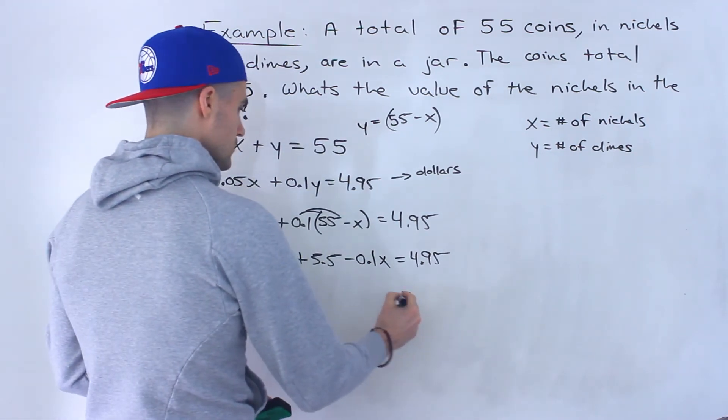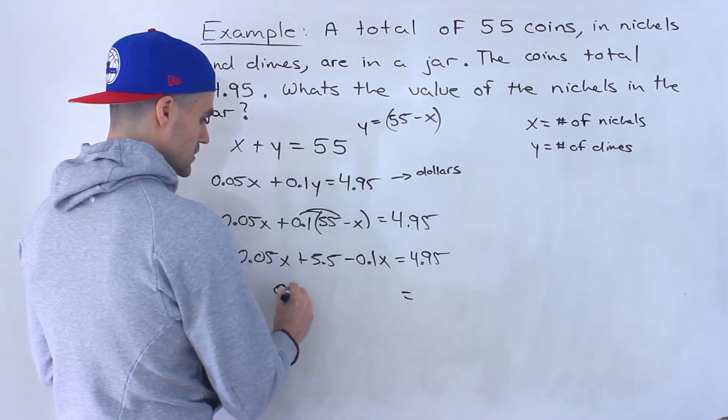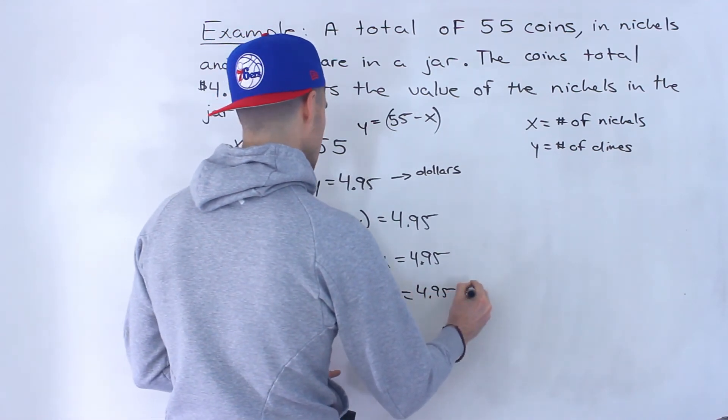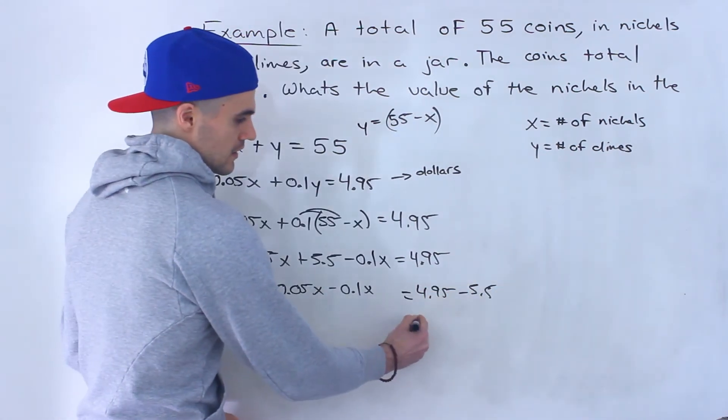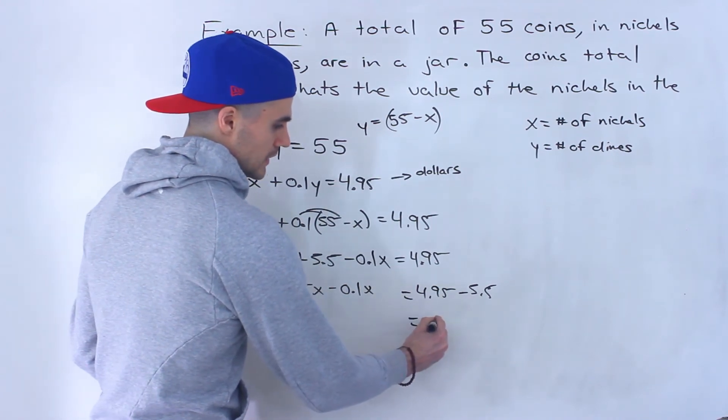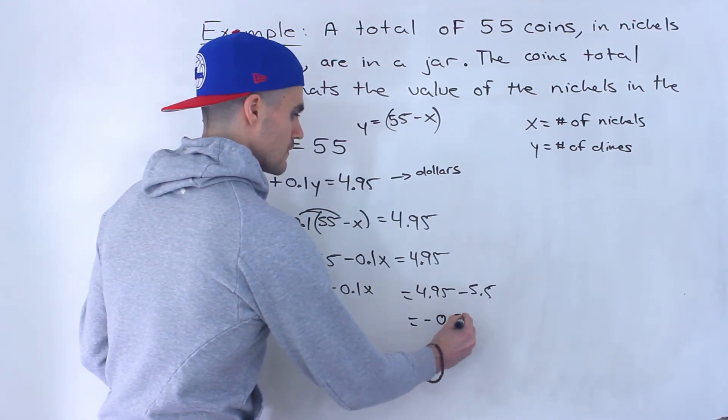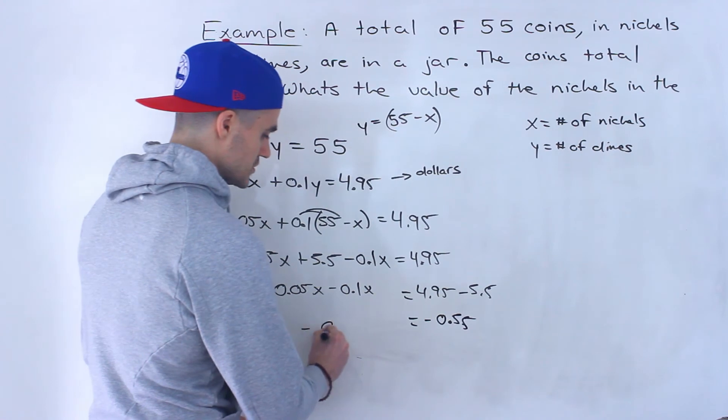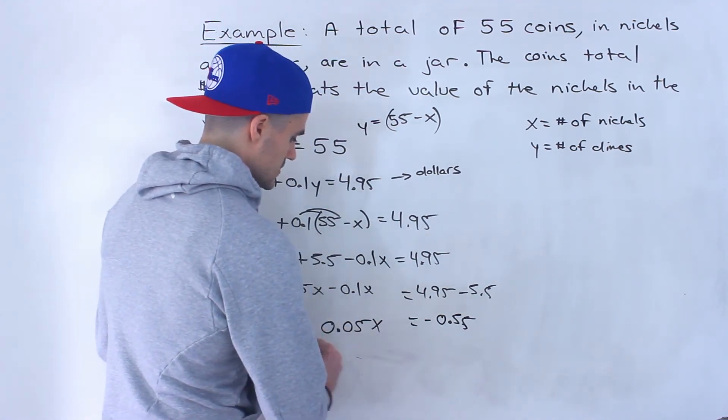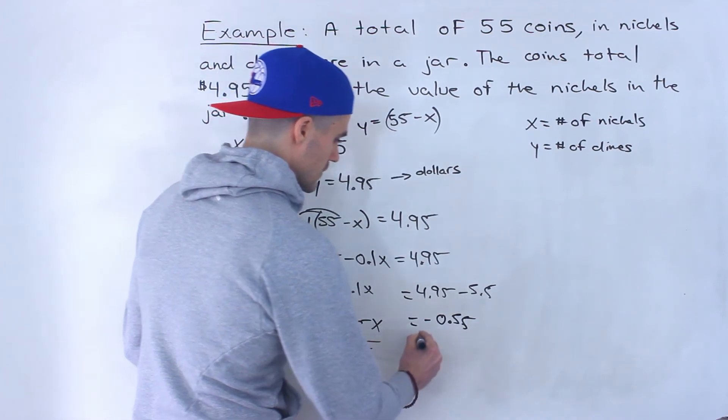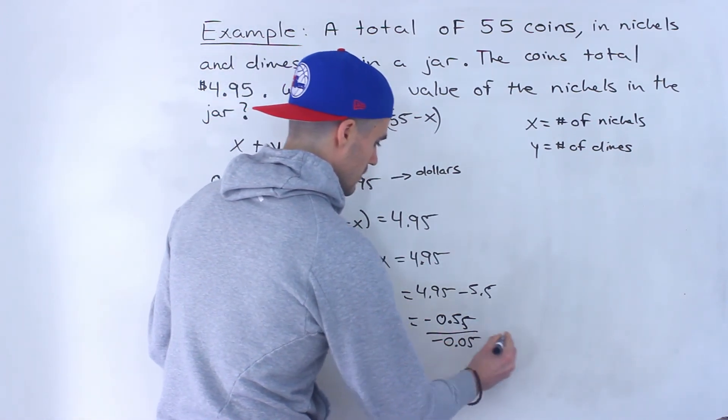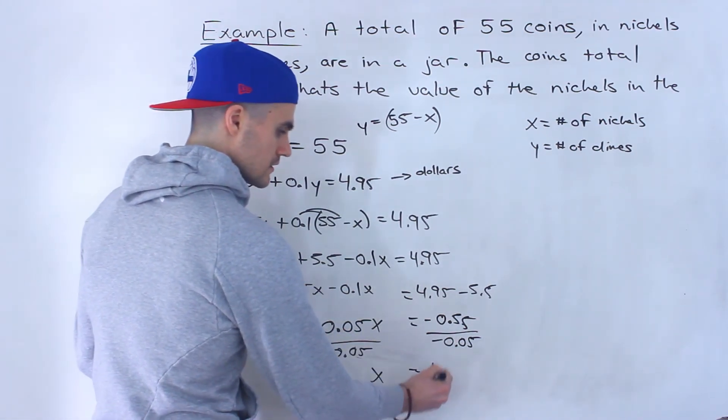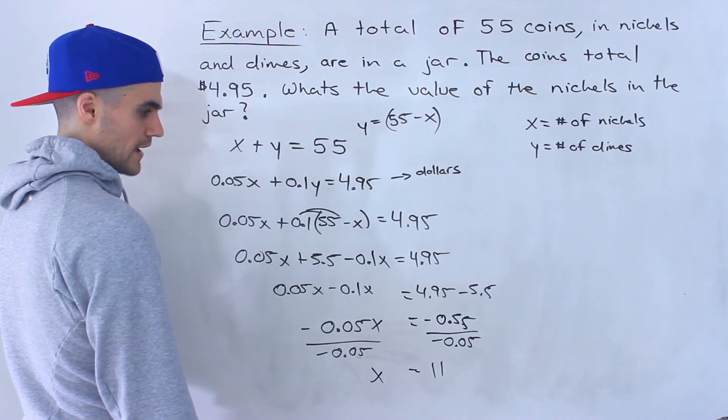And from here, what I'm going to do is bring the 5.5 over so we'll have 0.05x minus 0.1x equals 4.95 minus 5.5. So this here, the right side, would end up equaling negative 0.55. And then this here, 0.05x minus 0.1x would give us negative 0.05x. So divide both sides by negative 0.05. So x, when you do this, you'd end up getting 11. So x would be 11.